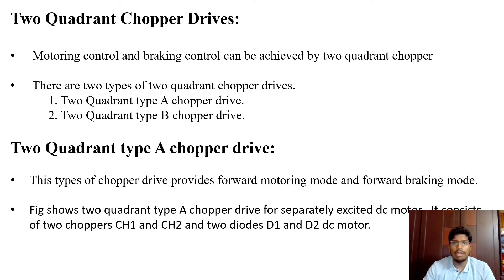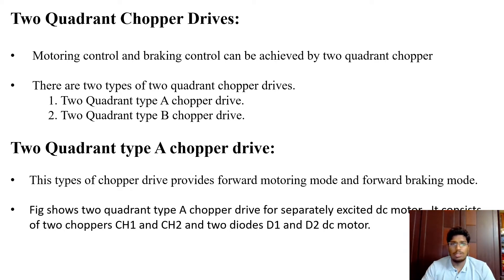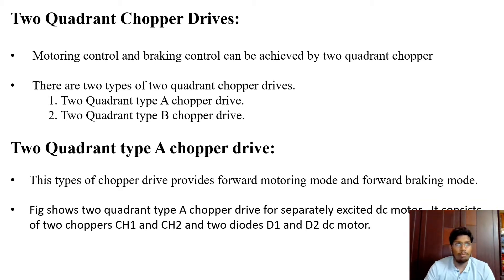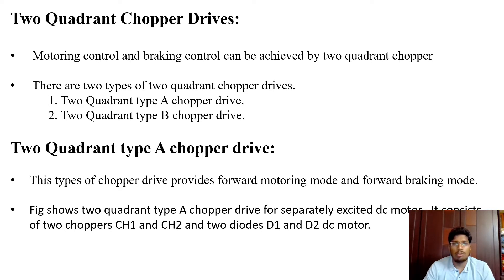Motoring control and braking control can be achieved by a two quadrant chopper. What does a drive mean to us? A drive is a device which is used to control the speed of a motor — it can be a DC motor, an AC motor, or any other type of motor. There are two types of two quadrant chopper drives: Type A and Type B.